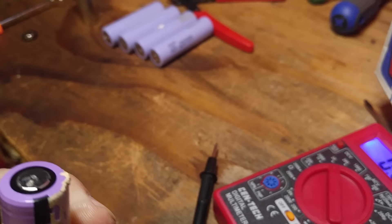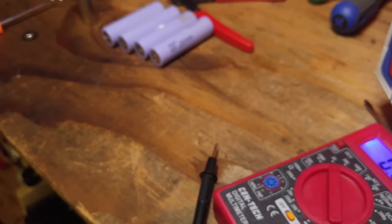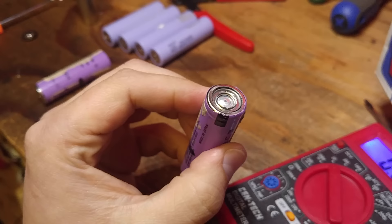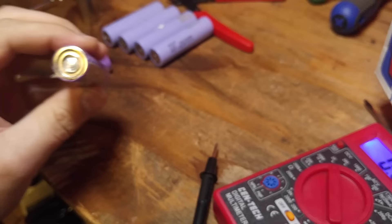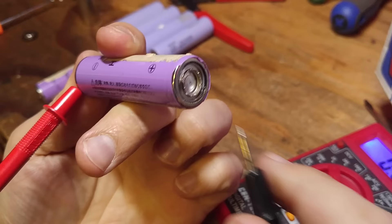The papers I've seen on it call it a CID, or a current interrupt device. So, when pressure builds up within the cell, it pops that disc out, and it disconnects the cell from circuit. So, I'll just give a little example here, I just cut the top off of this to show for the video, because it's a junk cell.